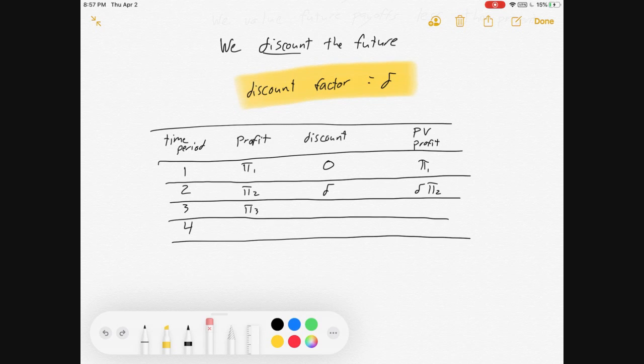π3 in period 3, delta squared in period 2. Sorry, delta squared in period 3. So you get δ²π3, and then so on for the 4s.